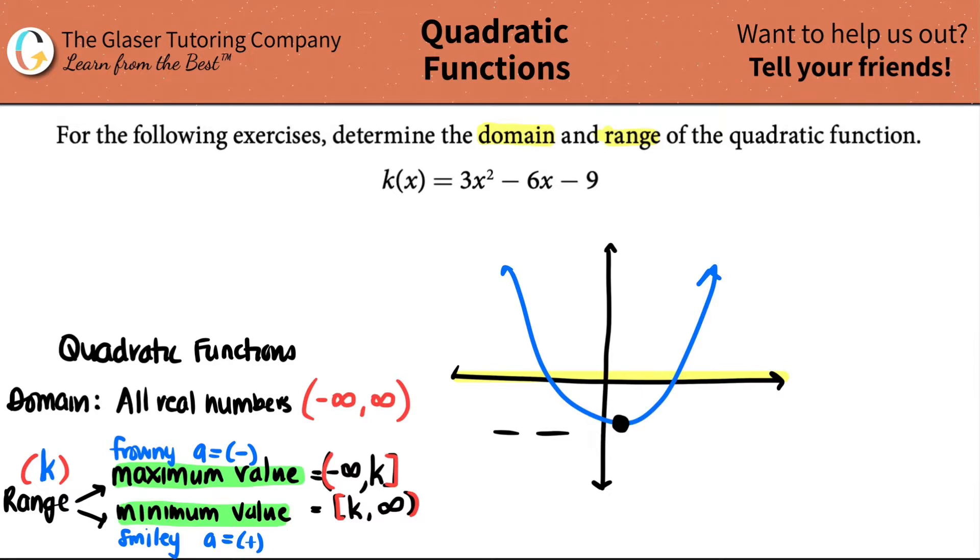Now, the actual number for the range is the k value. That's going to be the actual min or max value. So we have to find that. Now, first, let's just get some things out of the way here.